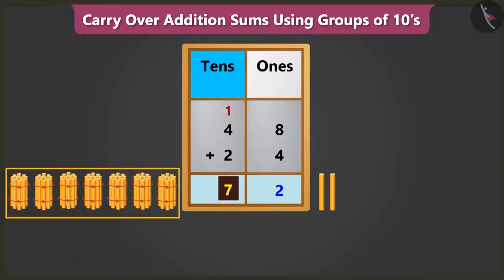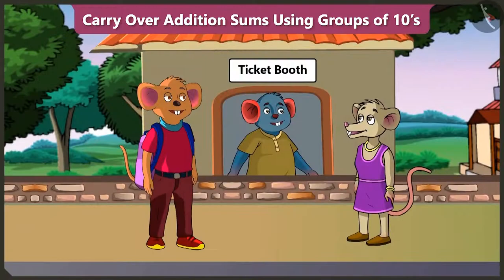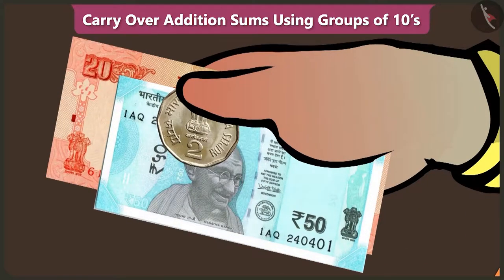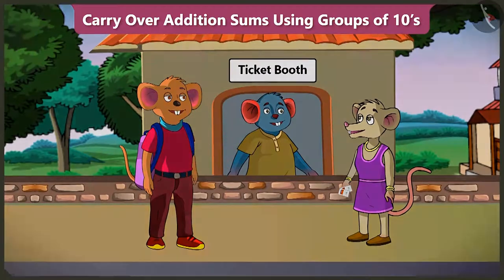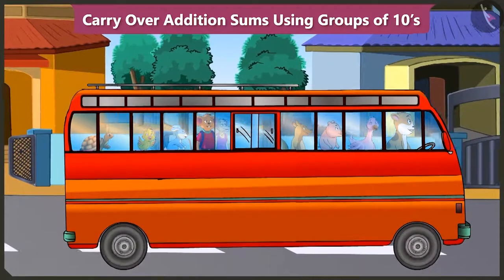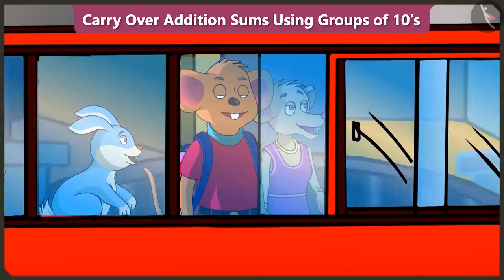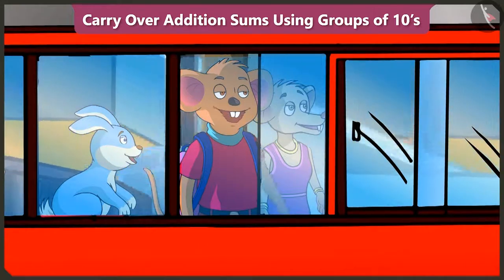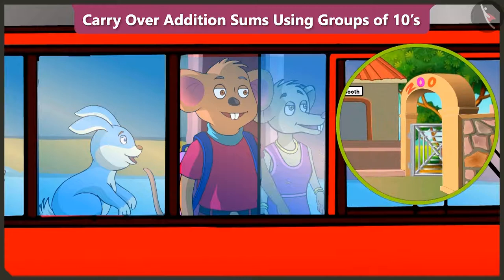Now 7 tens added to 2 ones makes 72, so we have to pay 72 rupees. Please take 72 rupees. Take your ticket. Let us go and sit in the bus. I am enjoying the bus ride. Let's go Chichi, we have reached the zoo.